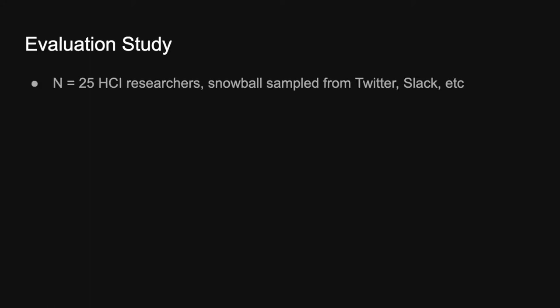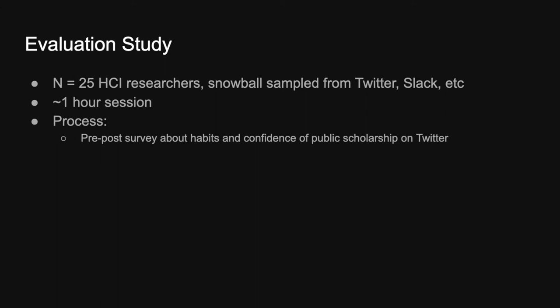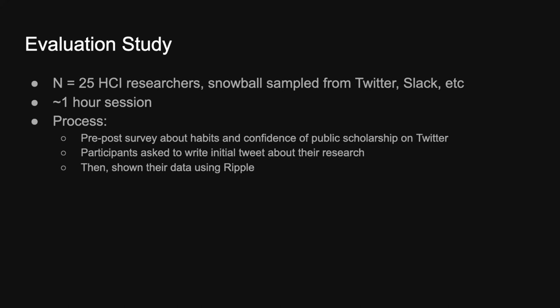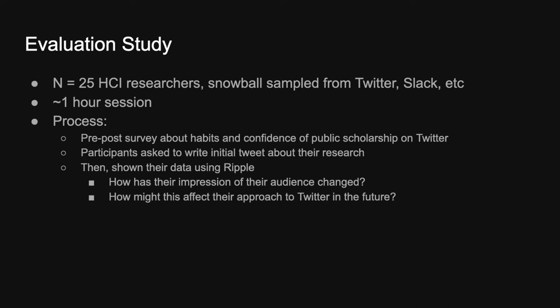We also provided more granular information about downstream audiences for individual tweets as a success metric, and sections highlighting what their audience is talking about — most common hashtags and tweets among the three different groups — to give a sense of what people in their audience are discussing. We then ran an evaluation study recruiting about 25 HCI researchers through snowball sampling from Twitter and Slack. These were one-hour sessions with a pre/post survey about habits and confidence in science communication on Twitter. We asked participants to write an initial tweet about their research before seeing the tool, showed them their data using Ripple, asked how their impression of their audience changed, and then had them write a second tweet given new insights to see if their approach changed.